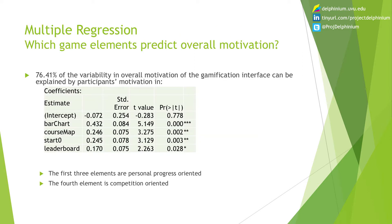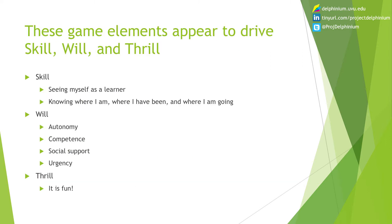Because we're researchers, we also ran statistics. A multiple regression asked which game elements drove overall motivation the most. Four game elements accounted for 76% of the variance in overall satisfaction: the bar chart showing points from zero up, the course map, starting at zero, and the leaderboard. The first three are all about knowing where you are, where you're going, and where you've been. The fourth is about seeing yourself in the context of other people. The empirical data is starting to substantiate the theoretical background of skill, will, and thrill.